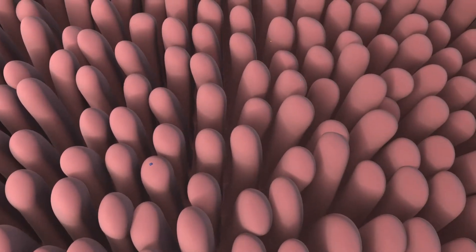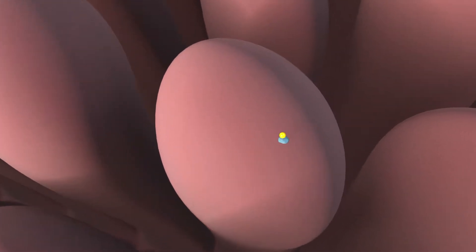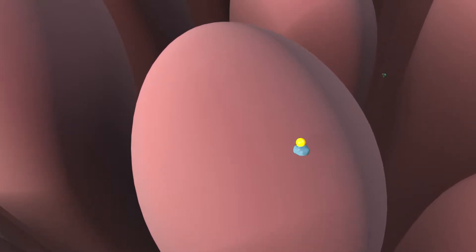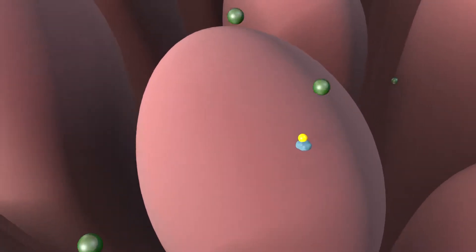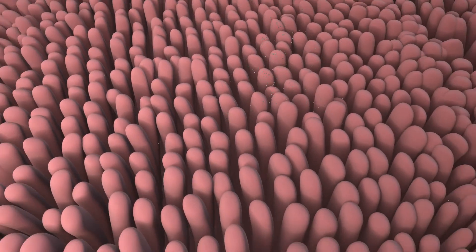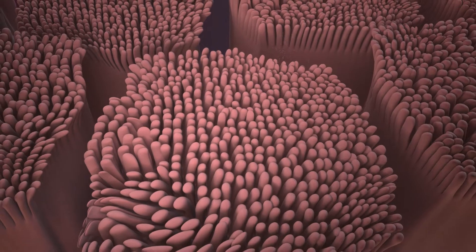Another way involves bringing the gliadin between enterocytes. Gliadin reacts with CXCR3 receptors on enterocytes causing zonulin to be released. Zonulin regulates tight junctions between the enterocytes. Excess zonulin creates a leaky gut allowing gliadin to flow into the lamina propria.